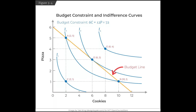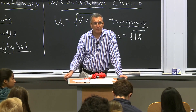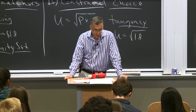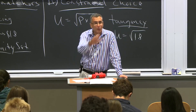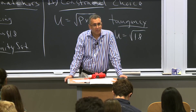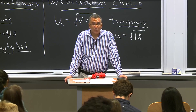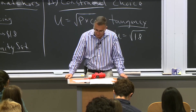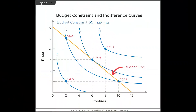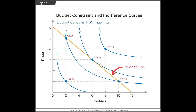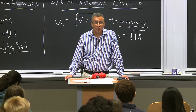Why is point D better than point A? Point D dominates point A because it's on a higher indifference curve. By that same logic, why not choose point E? You can't afford it — it's above the budget constraint. And point C has the same slope as point D — a tangent line at C has slope negative one-half — but you wouldn't be spending all your money, so you wouldn't choose that point either.